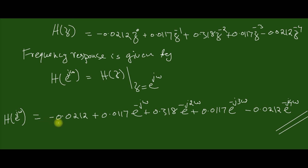We can further expand or simplify by applying Euler's identity — that is, e^(−jω) can be replaced with cos(ω) − j·sin(ω) — so that finally the result is in cosine and sine function format.